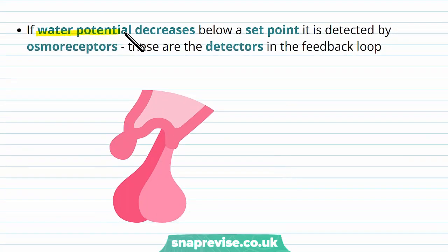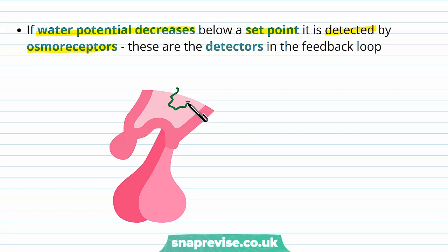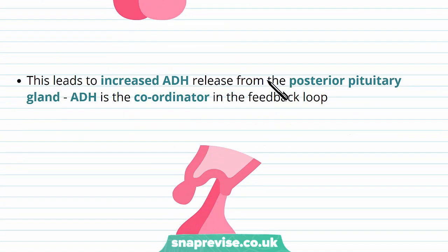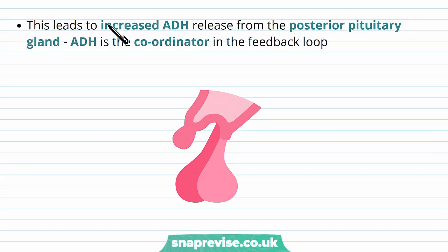If the water potential in our blood decreases below the set point, this is detected by osmoreceptors in the hypothalamus — a type of neuron that responds to the level of water in the blood. If there's not enough water in the blood and water potential is reduced, these cells start to shrink. They act as the detectors in the feedback loop, and when they detect this, they cause increased ADH to be released from the posterior pituitary gland, just below the hypothalamus.